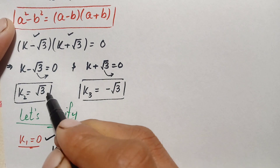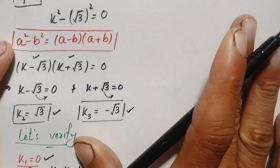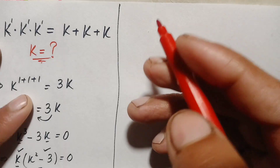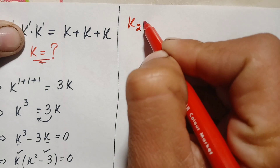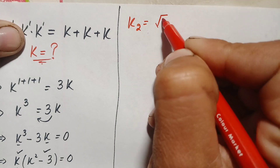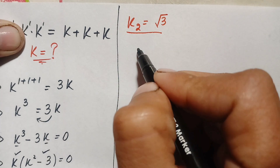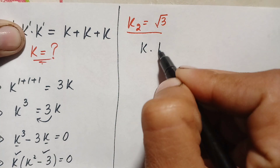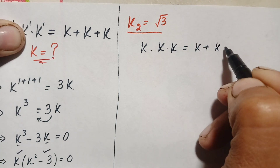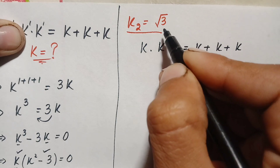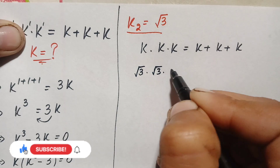Now we verify k₂ equals positive √3 and k₃ equals negative √3. Starting with k₂ equals positive √3: we write the original problem k times k times k equals k plus k plus k, and replace k with √3. This becomes √3 times √3 times √3 equals √3 plus √3 plus √3.